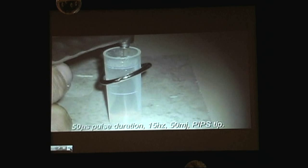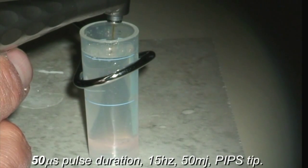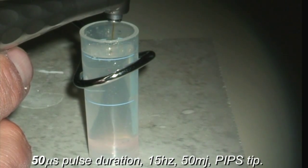Here's an example of how the photoacoustics and PIPS actually work. We took a vial and used a 50 microsecond pulse duration with the Layers Power Allays AT. Watch what happens here when you watch this test tube — 50 microseconds, 50 millijoules, 15 hertz, PIPS tip.